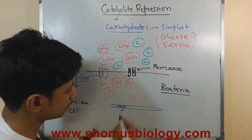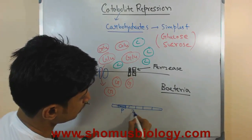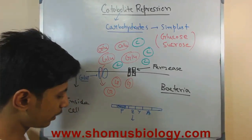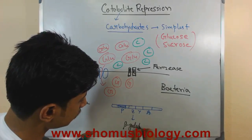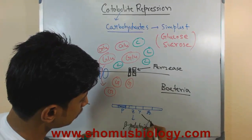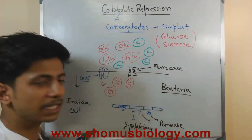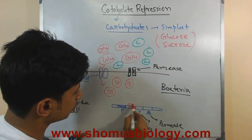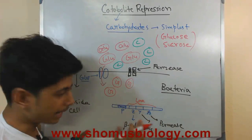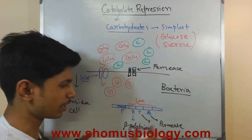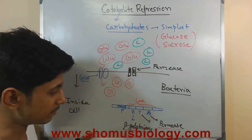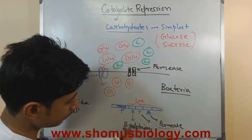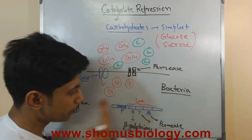In the lac operon, following the promoter, we have genes Z, Y, and A. These genes produce different enzymes: for example, Z produces beta-galactosidase, and Y produces permease. These are the genes of the lac operon. When this operon is on and these genes are transcribed and translated into proteins, they produce beta-galactosidase and permease. Both enzymes are required for lactose metabolism — beta-galactosidase breaks down lactose, and permease is required for the uptake of lactose into the cell.